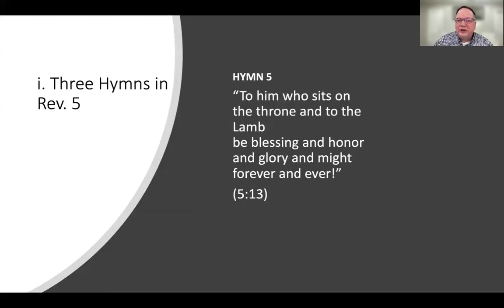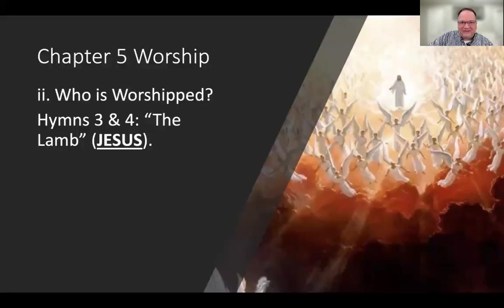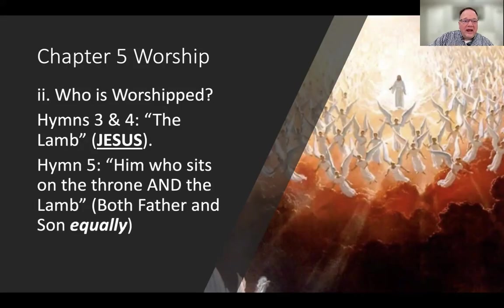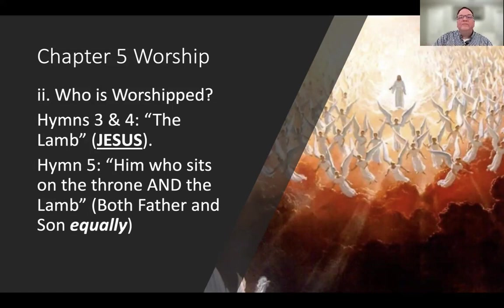Hymn number five: 'To him who sits on the throne and to the Lamb, be blessing and honor and glory and might forever and ever.' In hymns three and four, it's the Lamb — Jesus — who is being worshiped. In hymn five, it's to God the Father and the Lamb — both the Father and the Son are worshiped equally. In all three of the chapter 5 hymns, the Lamb is the object of worship. In hymn five, it's shared worship between the Father and Son. Hymns three and four are exclusively to the Lamb.